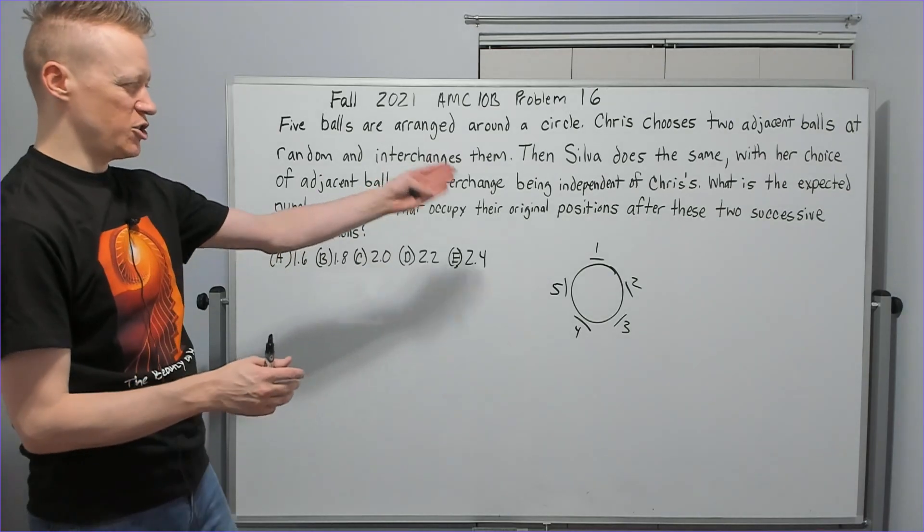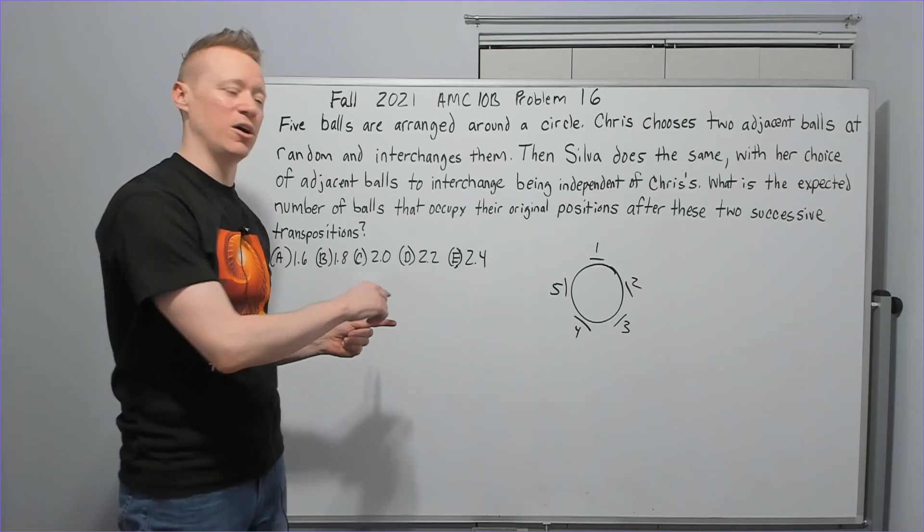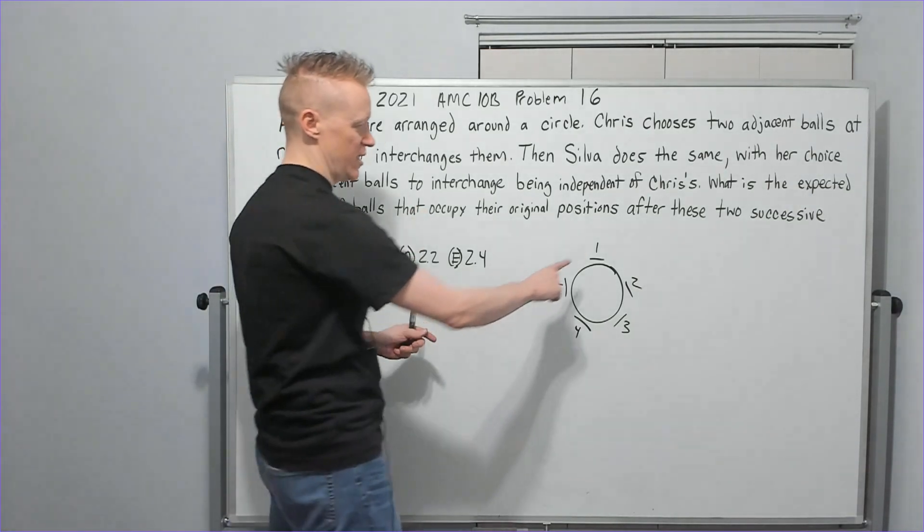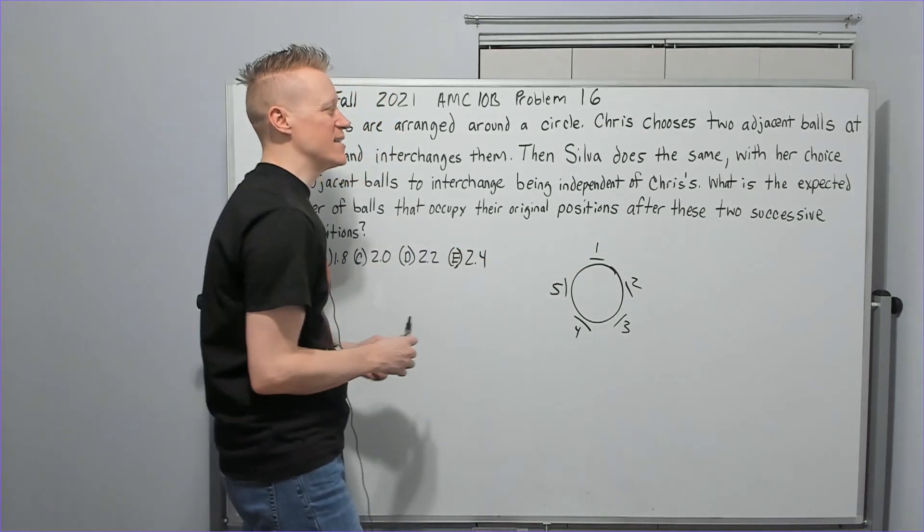All right, so Chris is going to choose two adjacent. Since they're adjacent, just think of his choice as the leftmost ball going clockwise. So he could do one and two, two and three, three and four, four and five, five and one. He's got five choices.